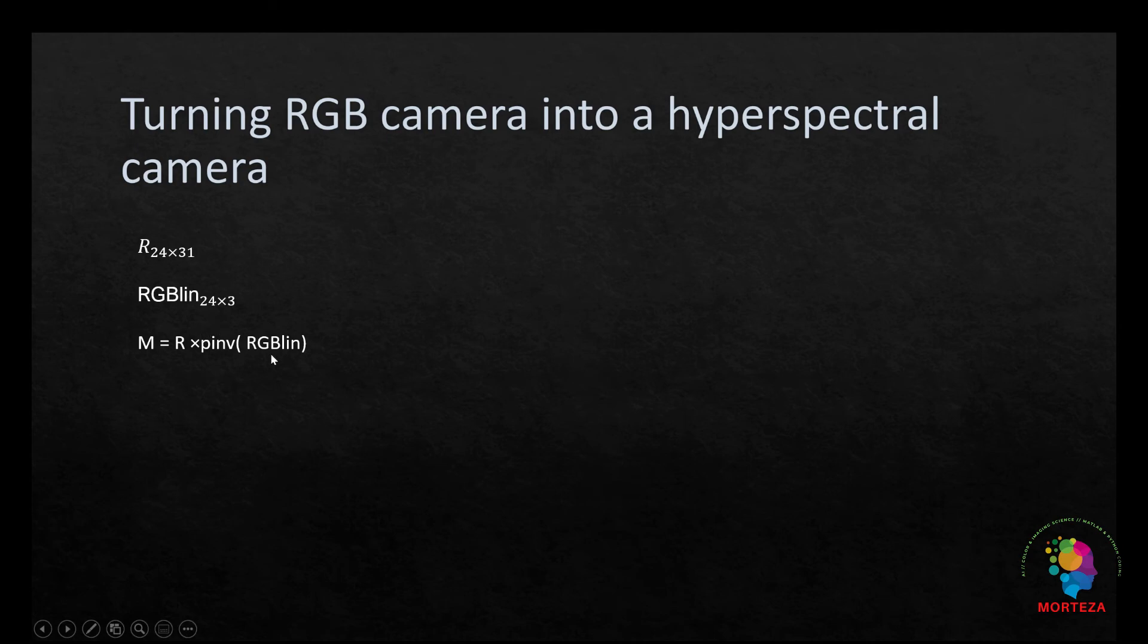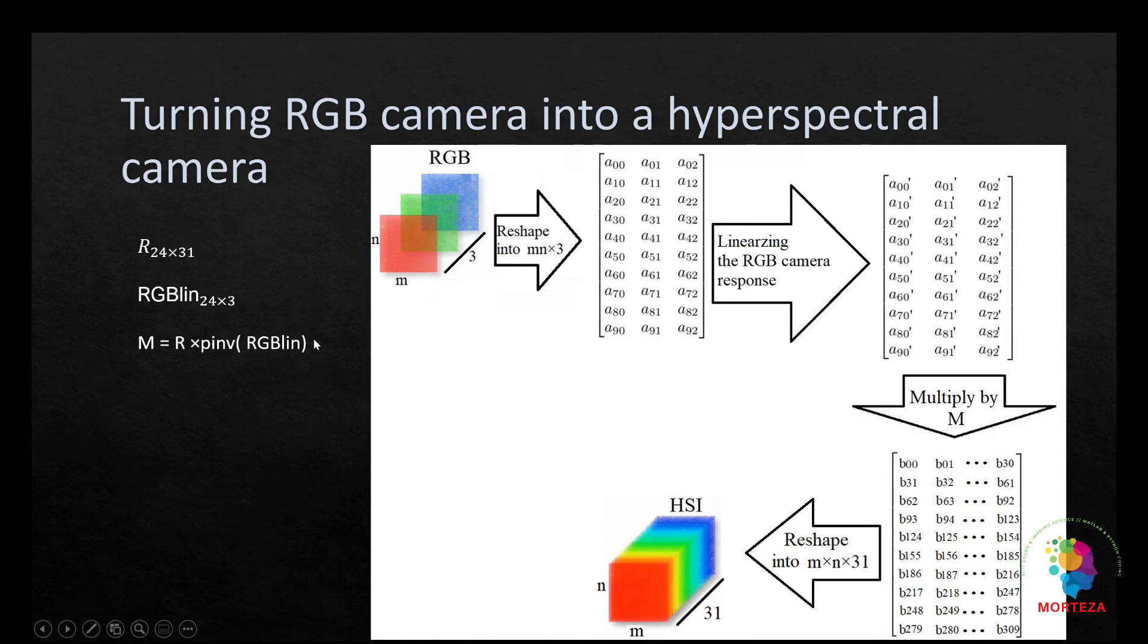Here's an example. Let's say we have an image of size M by N by 3. We're interested in knowing the spectral reflectance data at each pixel. We first change the image into a shape M by N by 3. The image was reshaped into a matrix which has three columns and a number of rows M by N. Then we linearize it using the equation we already came up with.